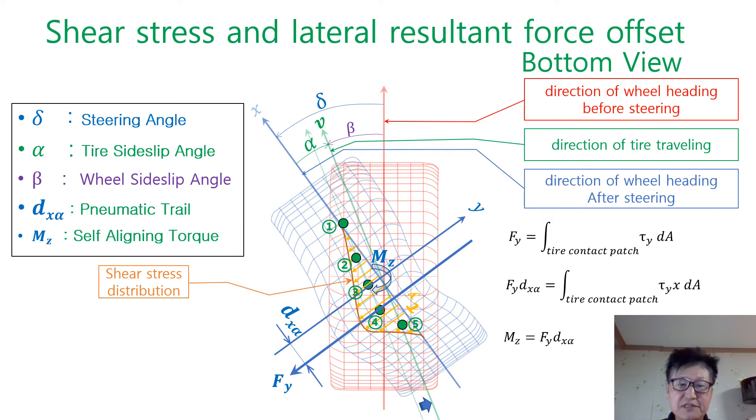Let's take a look at shear stress and lateral resultant force offset. This picture is again bottom view of tire. Shear stress due to lateral force gets bigger until location 4 passing the wheel center. Therefore, shear stress in the leading half here is smaller than in the following half.